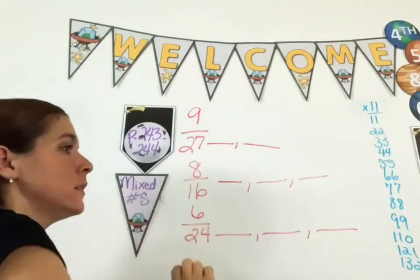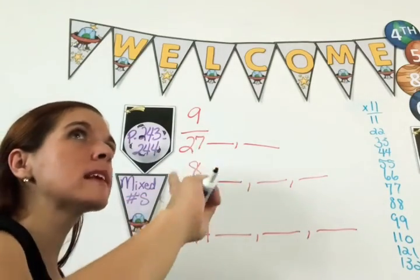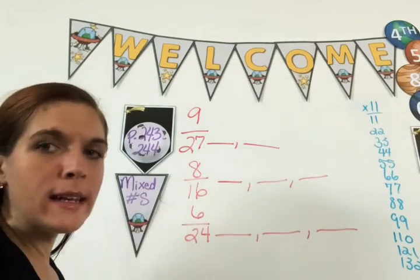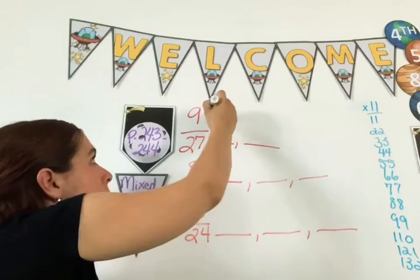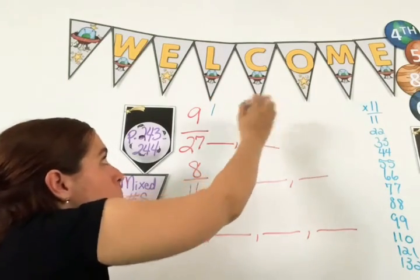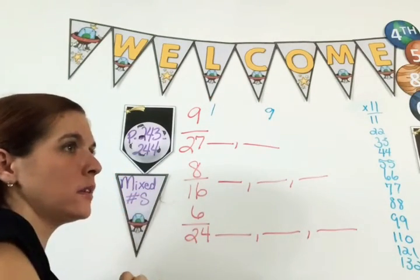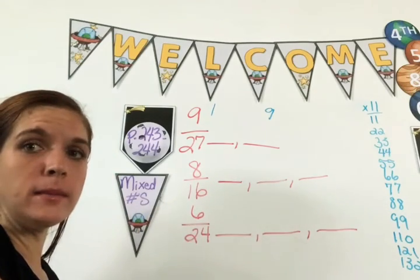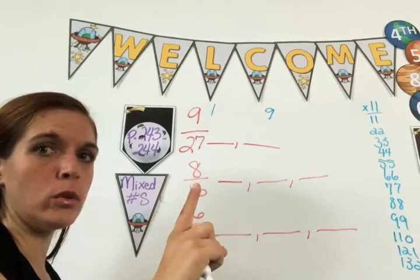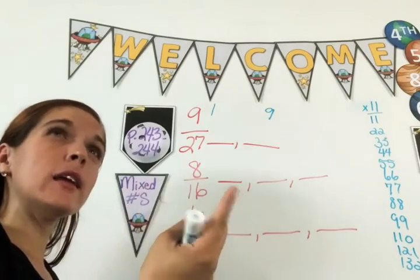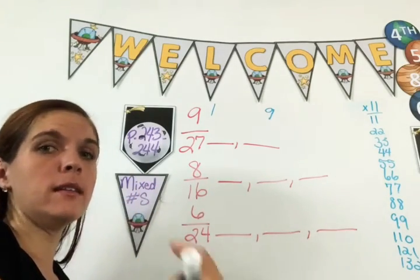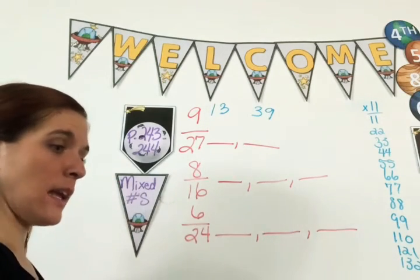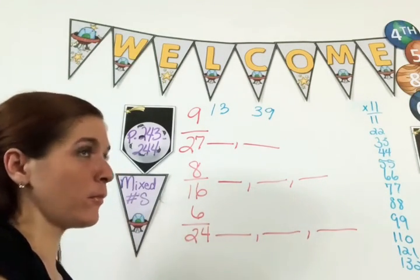What I mean by finding the factors is do this: look, nine. What numbers can multiply together to get nine? Well, you can always do one and nine, one times nine. So you're going to put the one here and the nine here, right? Then you go up to two. Can you do two times something to get nine? No.